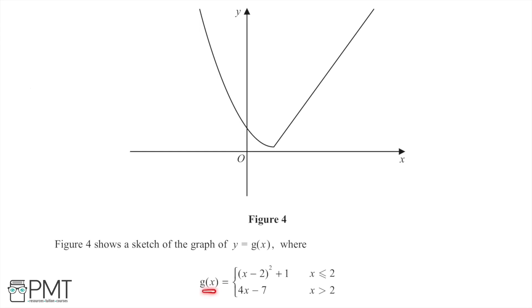In this question we're given a function g of x which is a piecewise function with two different parts depending on the value of x. For x less than or equal to 2, g of x equals x minus 2 squared plus 1, and for x greater than 2, g of x equals 4x minus 7. We can see the graph with a straight line for the 4x minus 7 part and a curve for the x minus 2 squared plus 1 part.